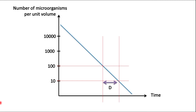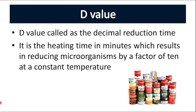Note that this D-value is obtained from the x-axis where the units are of time. So now we know that D-value is called the decimal reduction time. It is the heating time in minutes which results in reducing microorganisms by a factor of 10 at a constant temperature.